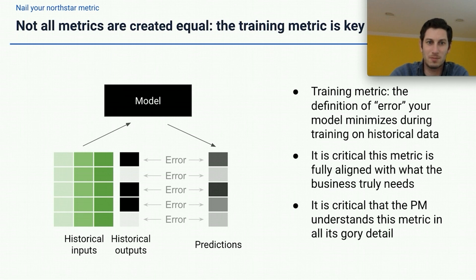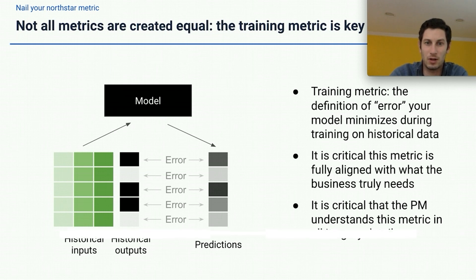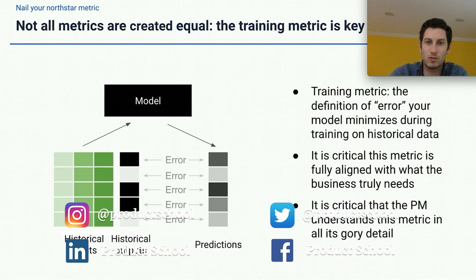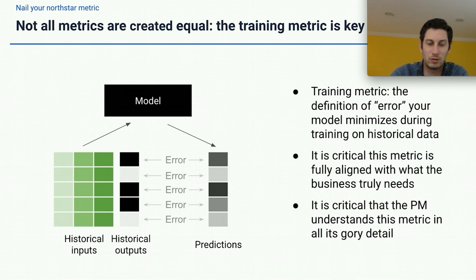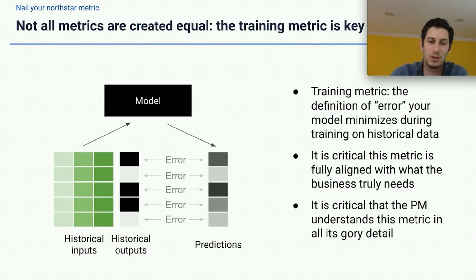To understand what I mean, let's look at what's under the hood of a learned algorithm. An algorithm takes in historical data, which includes inputs — sometimes called independent variables or features — and outputs, sometimes called dependent variables or labels. It then learns a relationship between those inputs and outputs, and tries to minimize the error of its predictions versus the historical ground truth outcomes. The definition of error — what we call the training metric or training error — is the crux of the model. If it's not aligned with the fundamentals of the business and what the user needs, that's not something that can be overcome downstream.